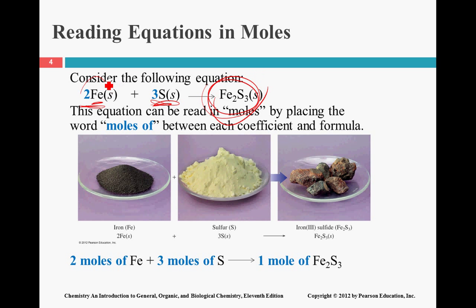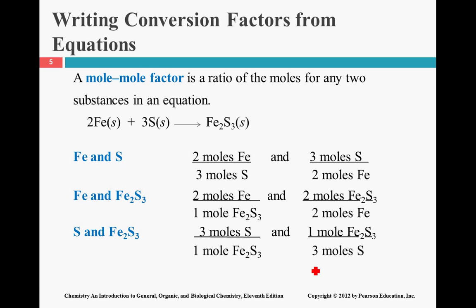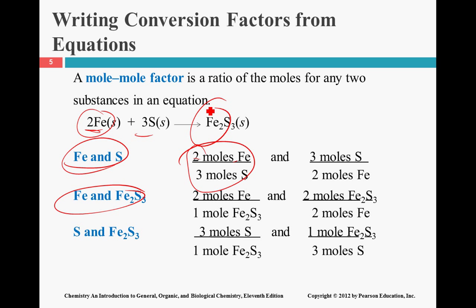Rather than talking about individual atoms and molecules, which nobody ever looks at one atom at a time, it's easier if we look at moles. Then we can start dealing with grams of stuff rather than very tiny decimal amounts. When we're looking at how moles are related to one another — for instance, Fe and S — for every two Fe we need three S, which is why we have two moles of Fe and three moles of S. It's a two-to-one ratio.